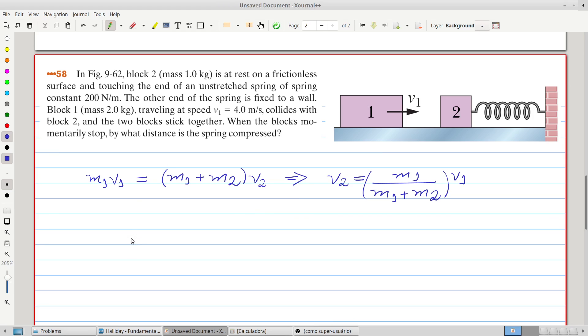So we can write that the kinetic energy of both blocks, that is, one half of M1 plus M2, the speed of both blocks, they are sticking together,